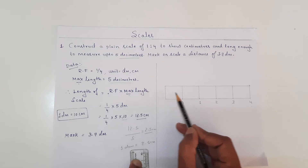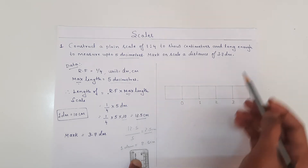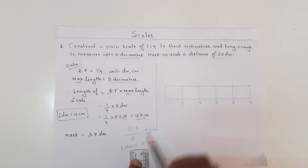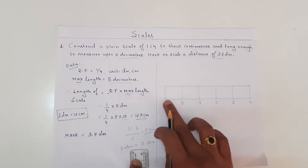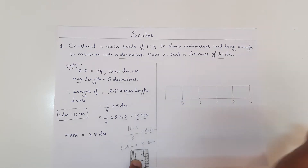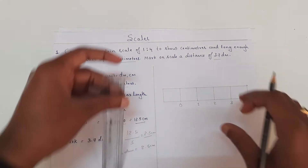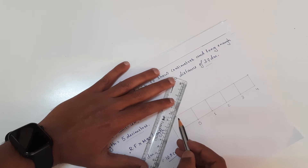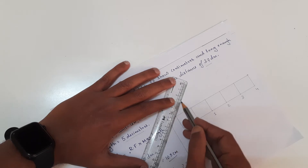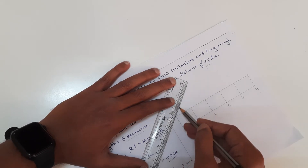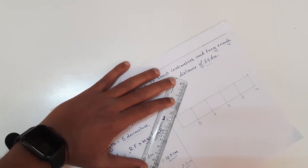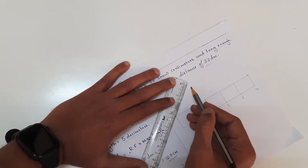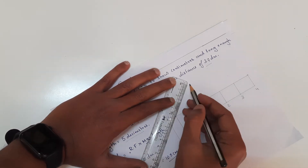I am going to mark this 1 decimeter into 10 equal parts because I need to represent 3.7 decimeters. To divide this 1 decimeter into 10 equal parts, I am going to draw an inclined line of 5 centimeters and divide this into 10 equal parts.